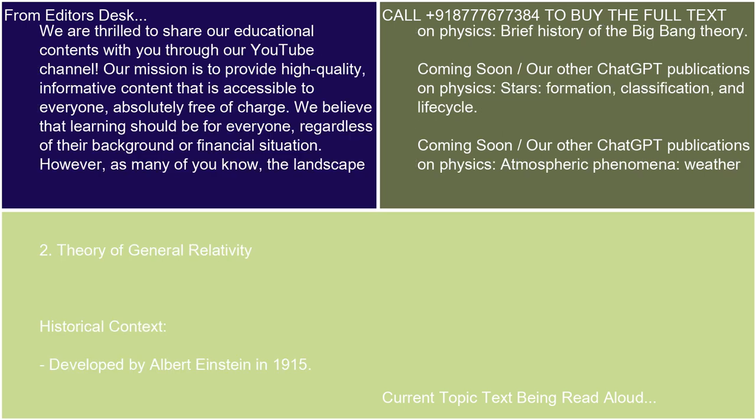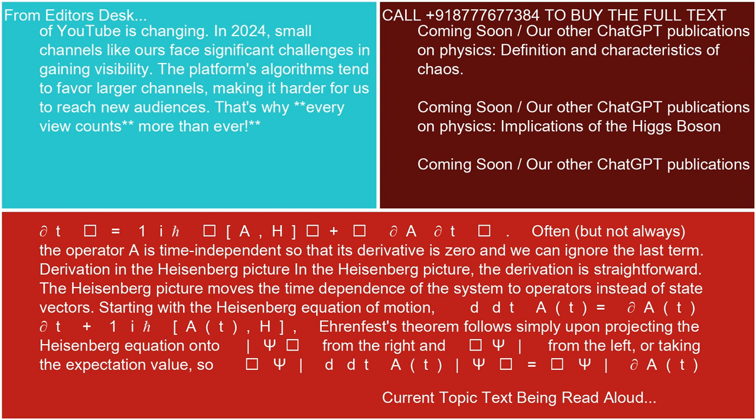2. Theory of General Relativity. Historical Context: Developed by Albert Einstein in 1915, General Relativity was a breakthrough in the understanding of gravitation, replacing Newton's Law of Universal Gravitation and extending the understanding of space and time.